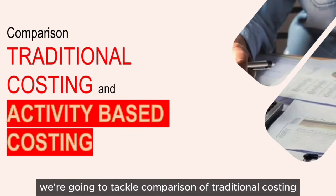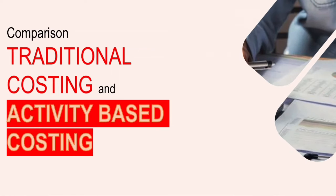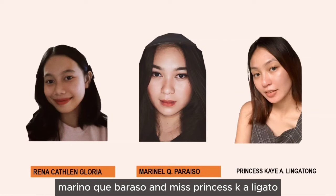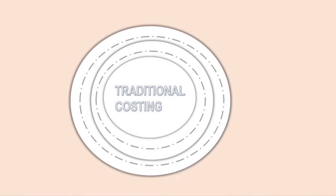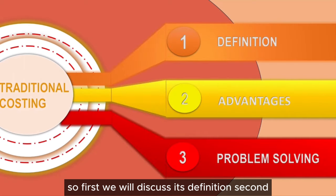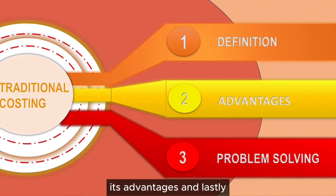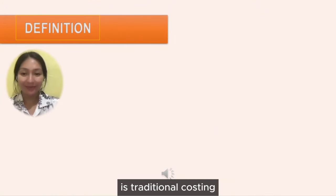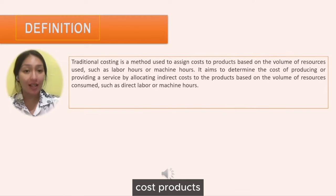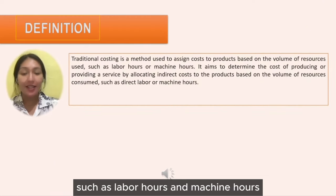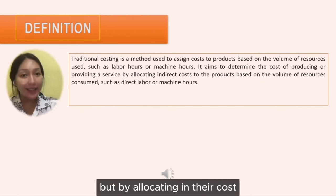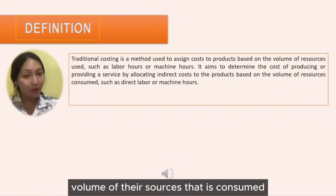We're going to tackle the comparison of traditional costing and Activity-Based Costing. Traditional costing is a method used to assign cost to products based on the volume of resources consumed, such as labor hours and machine hours. It aims to determine the cost of producing goods or providing a service by allocating indirect costs to products based on the volume of resources consumed.